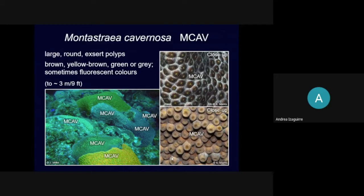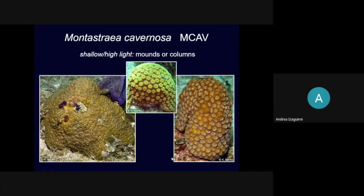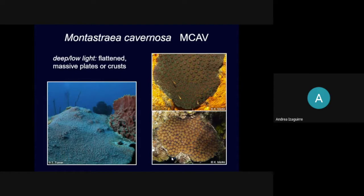How to tell SINT apart from Solenastrea bournoni: SINT has much smaller polyps and doesn't create bumpy surfaces; it also has very regular shapes. Solenastrea bournoni has polyps that exert outwards. Another way: if you see this coral here in Utila, it's most likely going to be SINT instead of SBOO. SINT also grows in bigger colonies than SRAD.